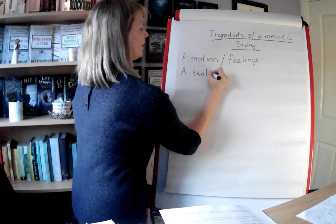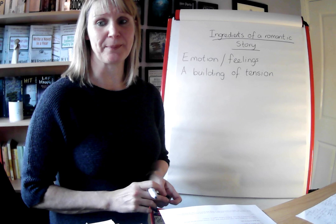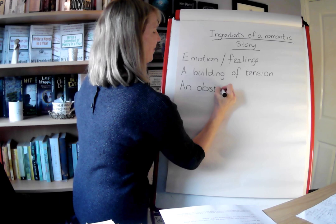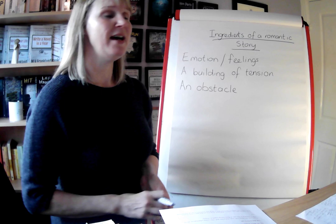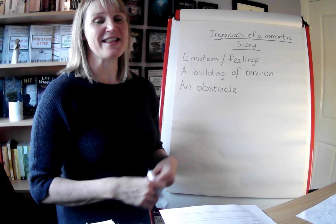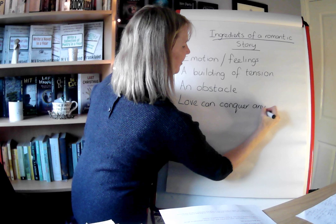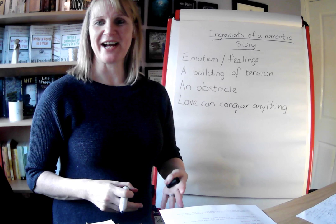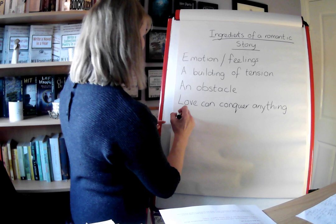The second ingredient, as with most stories, is a building of tension as the story goes on — it's not much of a story without some tension. We also need an obstacle — something getting in the way of that happy ever after, something keeping the characters apart, which creates the tension or conflict. Another important ingredient is that feeling that love can conquer anything. It doesn't necessarily have to be romantic love for another person; it can be love for a child, a pet or an activity.